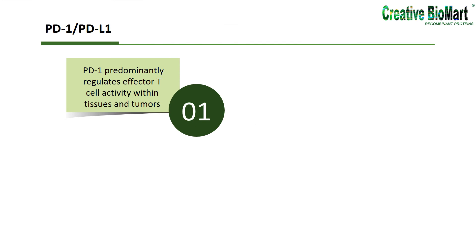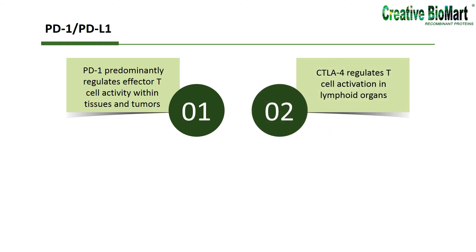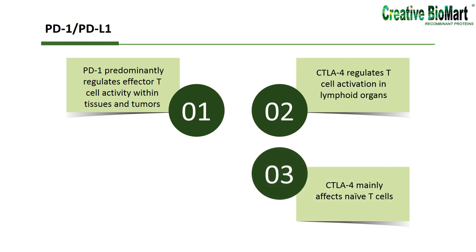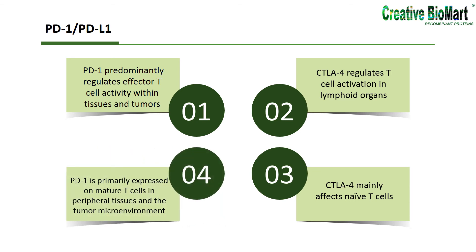Initially, PD-1 was demonstrated to be a receptor for cell death. However, the PD-1 pathway was later found to play a regulatory role in inhibiting T-cell activation and restraining T-cell function. In contrast to CTLA-4, PD-1 predominantly regulates effector T-cell activity within tissues and tumors, as opposed to regulating T-cell activation in lymphoid organs. While CTLA-4 mainly affects naive T-cells, PD-1 is primarily expressed on mature T-cells in peripheral tissues and the tumor microenvironment. It is also expressed on other non-T-cell subsets including B-cells, professional APCs, and natural killer cells.